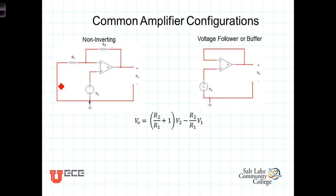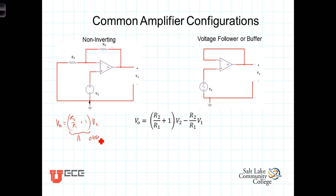In the non-inverting amplifier, V1 has been shorted out, so V1 equals zero. We're left with the equation: Vout equals (R2/R1 + 1) times V2. This quantity is known as the closed-loop gain for the non-inverting amplifier. The output equals the input voltage V2 times the ratio of the two resistances plus 1.